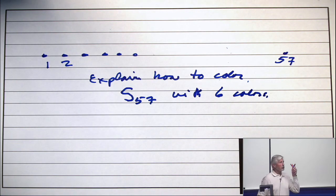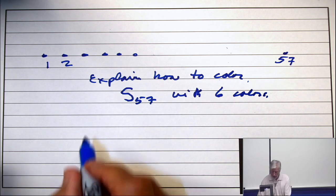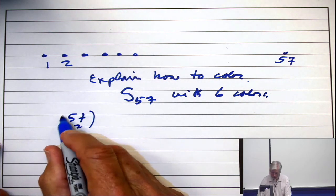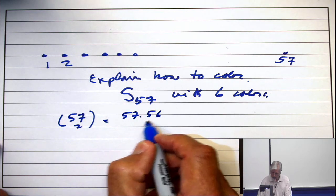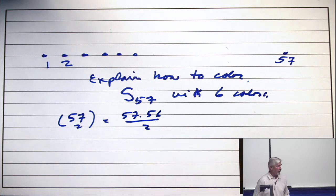How many vertices are there? There are 57 choose 2 vertices. 57 times 56 over 1 times 2. Oh, that's a lot of vertices. So, I don't want you to actually do the coloring.